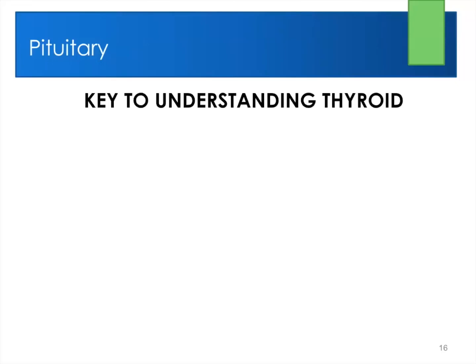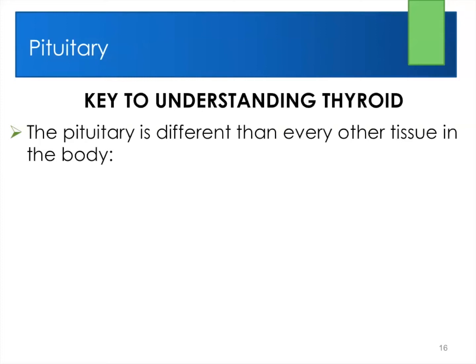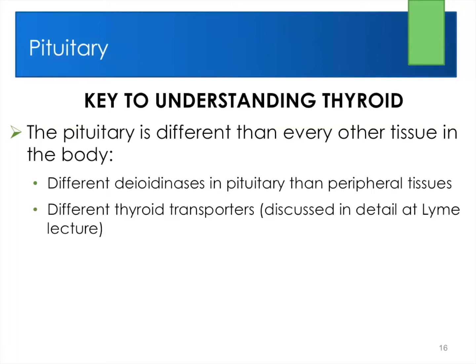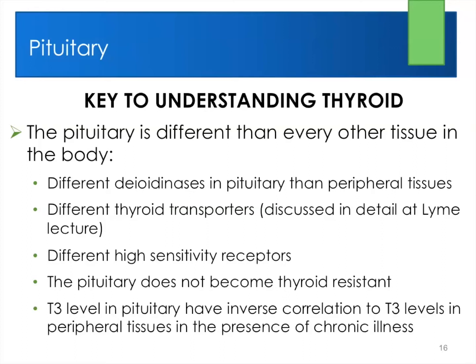Keys to understanding thyroid: the pituitary is different than every other tissue in the body. Different diabetes in the pituitary than peripheral tissues, different thyroid transporters, different high sensitivity receptors in the pituitary, and the pituitary generally does not become thyroid resistant. The T3 level in the pituitary actually has an inverse correlation to the T3 in the rest of the body.